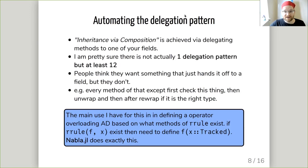Now to think of automating the delegation pattern. In Julia, we have what people commonly call a delegation pattern. It's part of this whole inheritance via composition thing, where you'll have some field you've wrapped and you're going to delegate your methods to it, so you'll recall the method on that field. I'm pretty sure there's not actually one pattern where you just simply recall onto that field, but there are 12 variants. By using metaprogramming, you can write whatever variant you need.